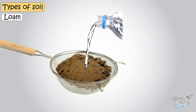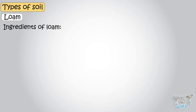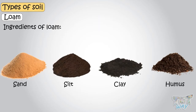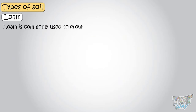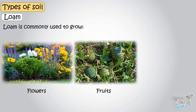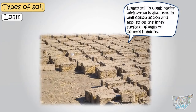Loam also holds just the right amount of water — neither too less nor too much. It lets some water in, while allowing the extra to drain. Ingredients of loam are sand, silt, clay, and humus. Loamy soil is ideal for plant cultivation and is commonly used to grow flowers, fruits, and a variety of vegetables. Loamy soil, in combination with straw, is also used in wall construction and applied on the inner surface of walls to control humidity.